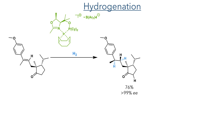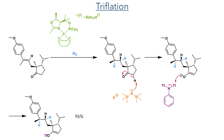The newly formed double bond was reduced in the next step using an iridium-catalyzed enantioselective hydrogenation with a chiral phosphonite oxazoline ligand, forming the compound in greater than 99% EE. The alpha position of the ketone was then deprotonated with KHMDS and the compound was triflated in a 96% yield using bis-triflylamide.